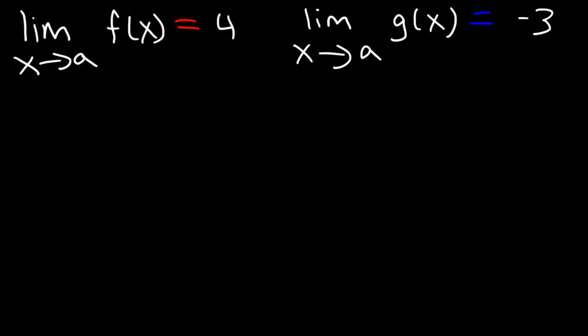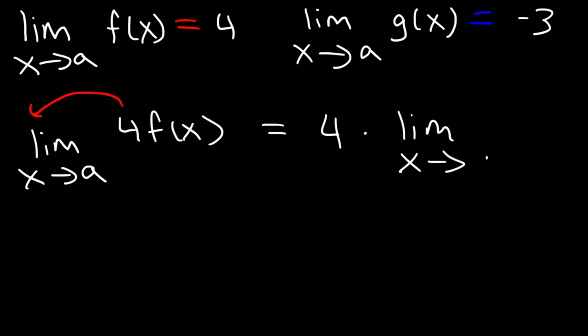Using that information, what is the limit as x approaches a of 4 f of x? What you're supposed to do is take the constant and move it to the front. So, this is equivalent to 4 times the limit as x approaches a of f of x. Instinctively, you know it's just 4 times 4 is 16. But if you want to show your work, this is how you should write it.